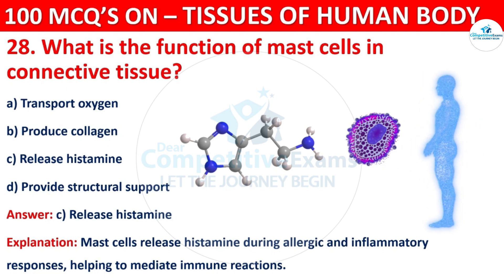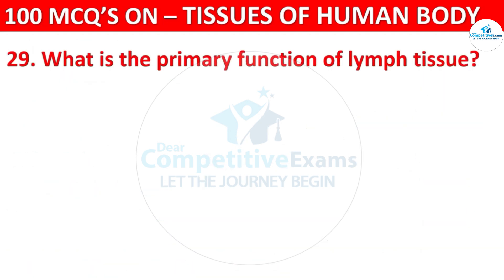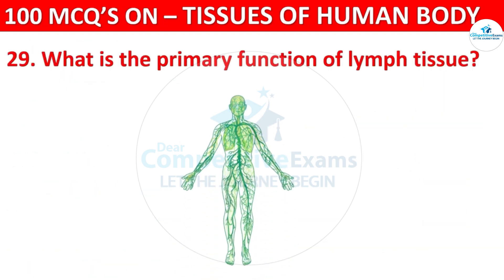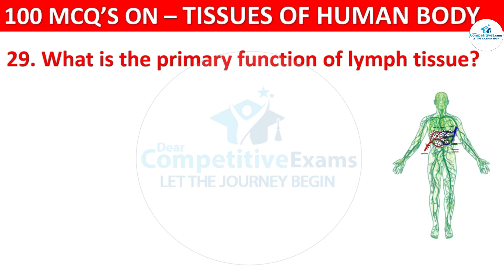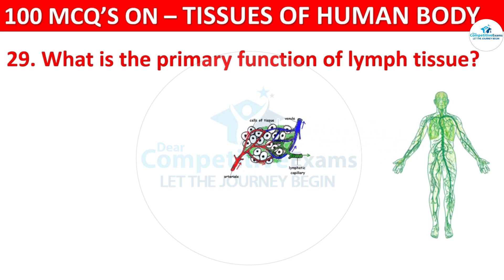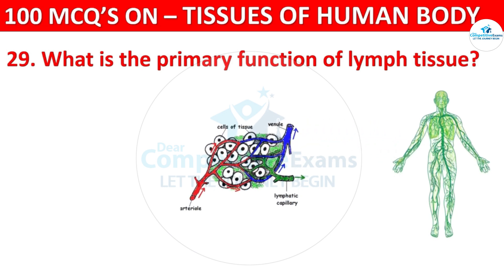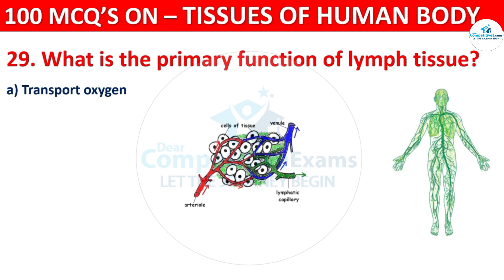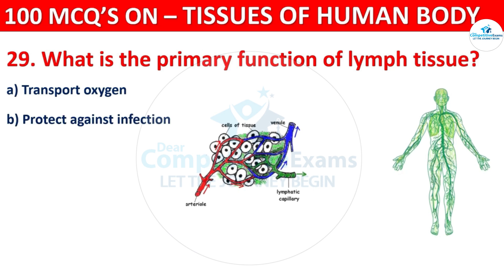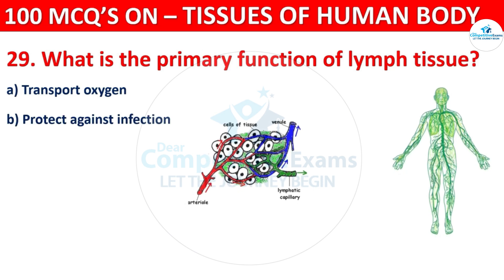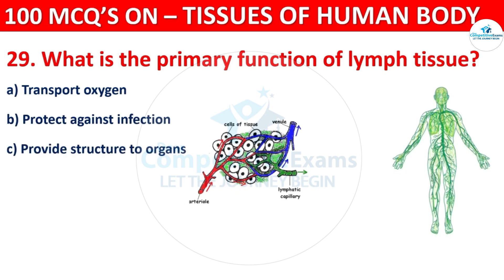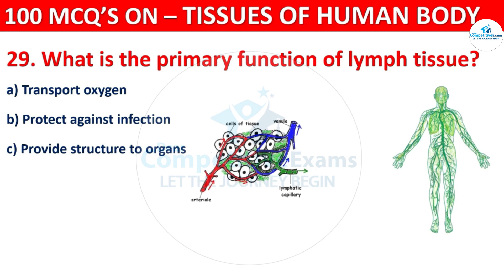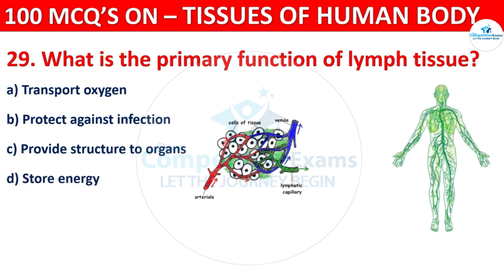Q29. What is the primary function of lymph tissue? The options are Transport Oxygen, Protect Against Infection, Provide Structure to Organs, or Store Energy.